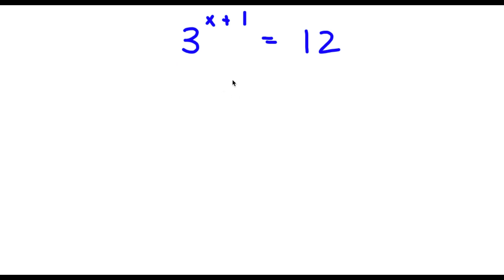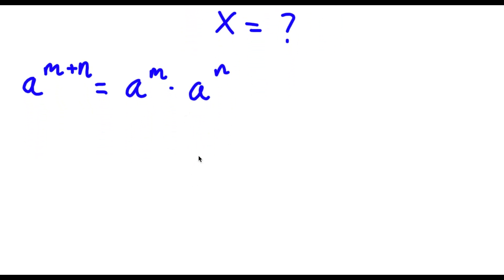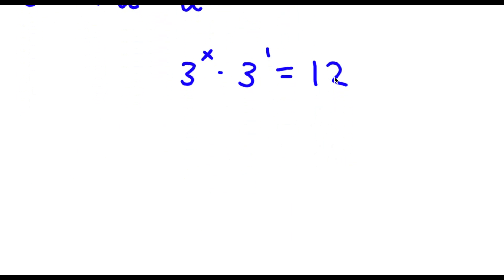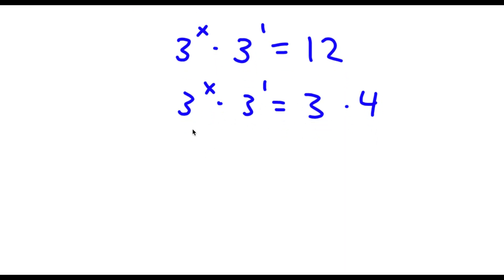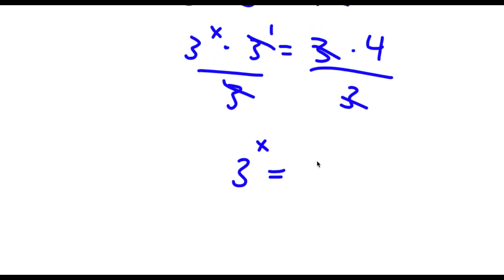Now I want to find the value of x in the bonus problem. If I have something in the form a to the power of m plus n, this equals a to the power of m times a to the power of n. So 3 to the power of x plus 1 equals 3 to the power of x times 3 to the power of 1, and this equals 12. I'll rewrite 12 as 3 times 4. Since both sides have 3, I divide both sides by 3 — these cancel out — and I'm left with 3 to the power of x is equal to 4.